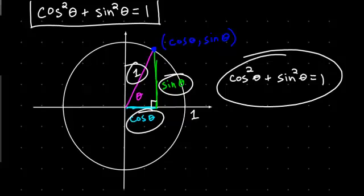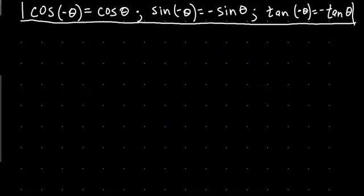Now let's go to another one. Let's look at these identities. We'll take them one at a time. Let's first show that cosine of negative theta equals cosine theta.